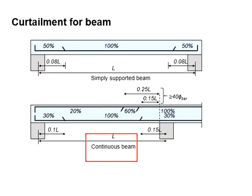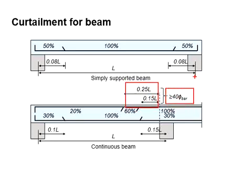For a continuous beam, normally we will expect hogging moment at the support. Assuming 100% of the reinforcement bar is provided at the top reinforcement at the support, the amount of reinforcement bar can reduce to 60% and 20% at the distance of 0.15L and 0.25L from the face of the support. This distance has to be at least greater than 40 times the bar diameter for the anchorage requirement.